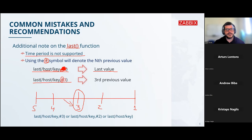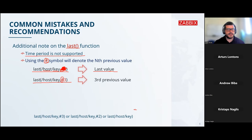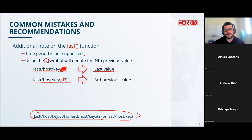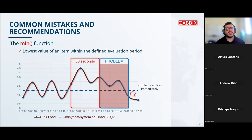Only that specific value is being referenced when we use last hashtag three. If you want to make an evaluation of the last several values, you can use some other functions or make comparisons. For example, if any of the last three values of this host key is higher than five, then you have a problem — you'd be making a comparison of three separate function calls.